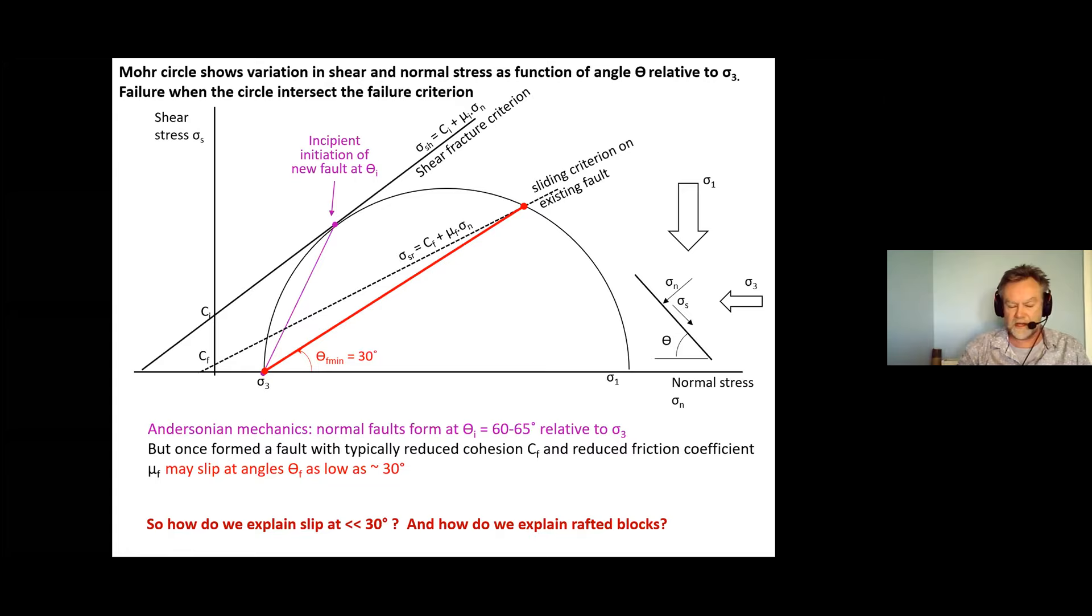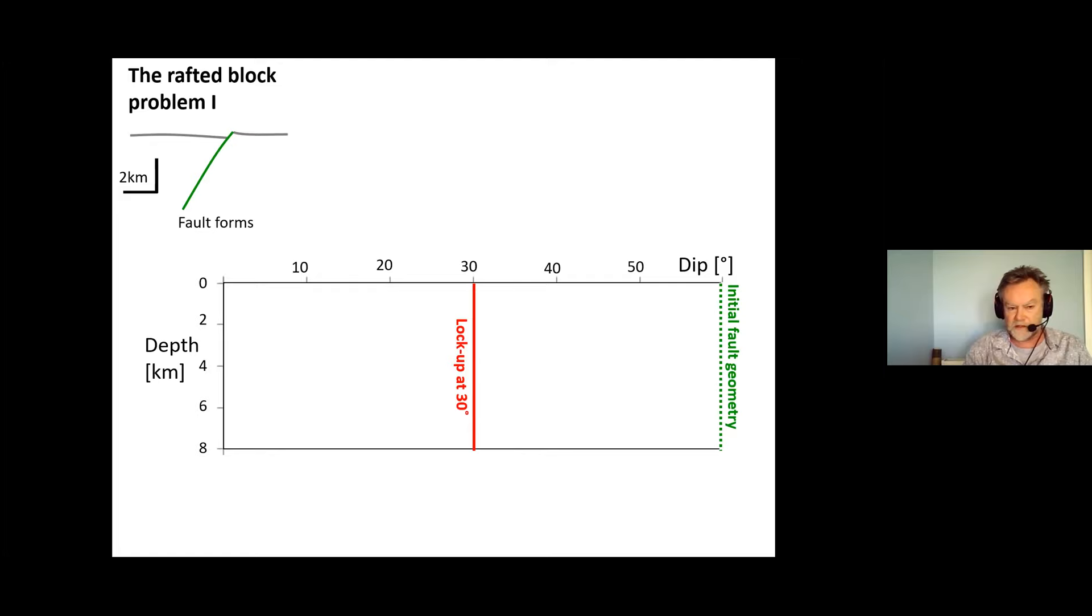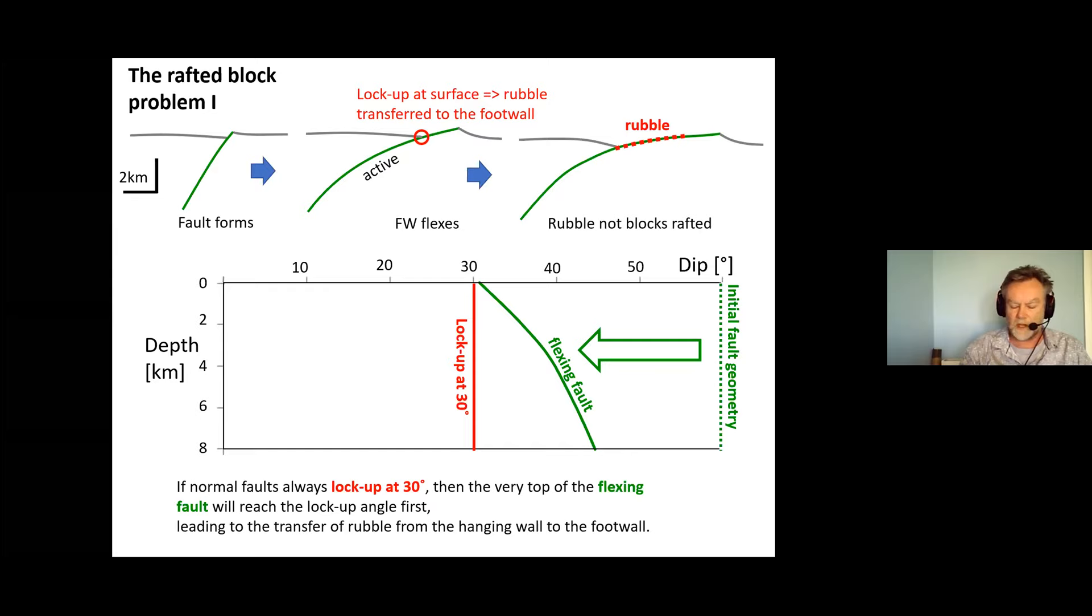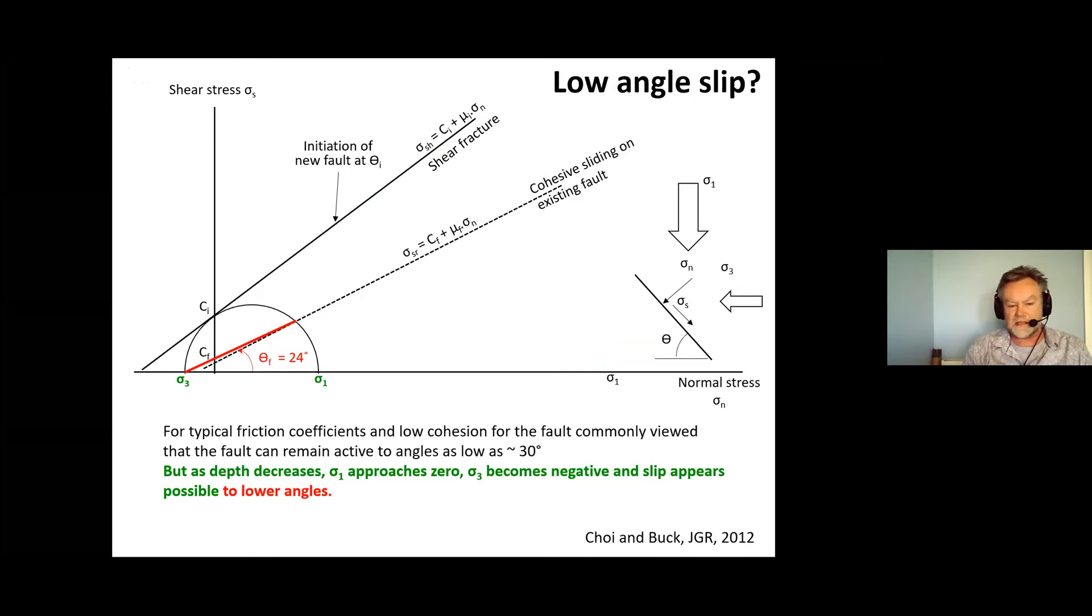So how do we explain slip at less than 30 degrees and how do we explain rafted blocks? I'm going to start off by looking at the rafted block problem first of all. Let's consider a normal fault which is flexing as it's unroofed and as it's unroofed it's going to take up a geometry like this. We can see that if the fault always locks up at 30 degrees very soon that's going to intersect the lock-up point so the fault's going to lock at the surface. If it locks at the surface we're not going to form a rider block, we're going to form rubble. Our faults are simply going to be covered with rubble rather than with rider blocks.